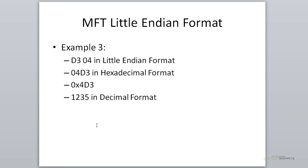Last example — example number 3: D3, 04. If that was in Little Endian format, I want to convert that over using right to left, giving us 04, D3 — or just 4D3 after dropping that leading zero. I can then convert that to decimal to find the value was 1,235 in the decimal numbering system. So this is just a basic overview of how to read in Little Endian format and be able to convert values over to a decimal or hexadecimal value.